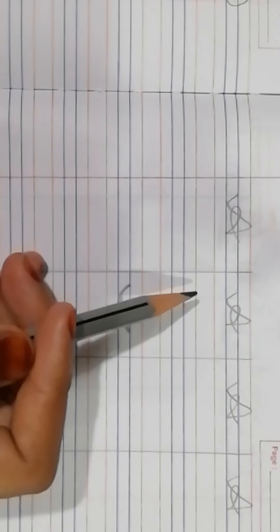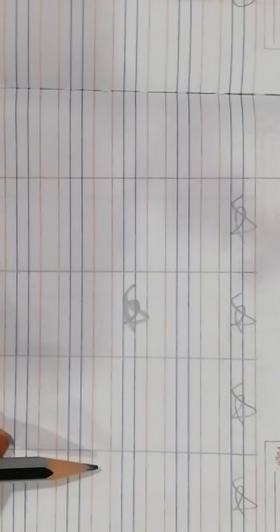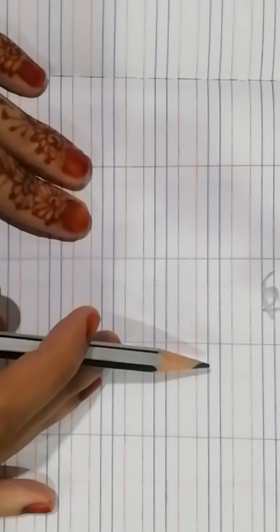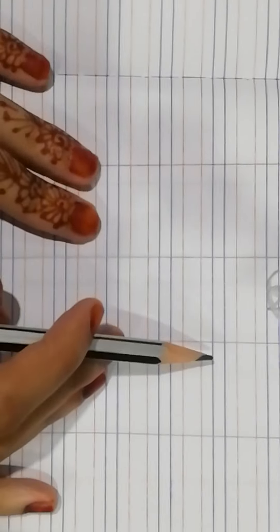Write today's date in the date column. With the help of a scale, draw one, two and three straight lines in your book, and then start writing the next letter, that is letter MAMA B or capital B.